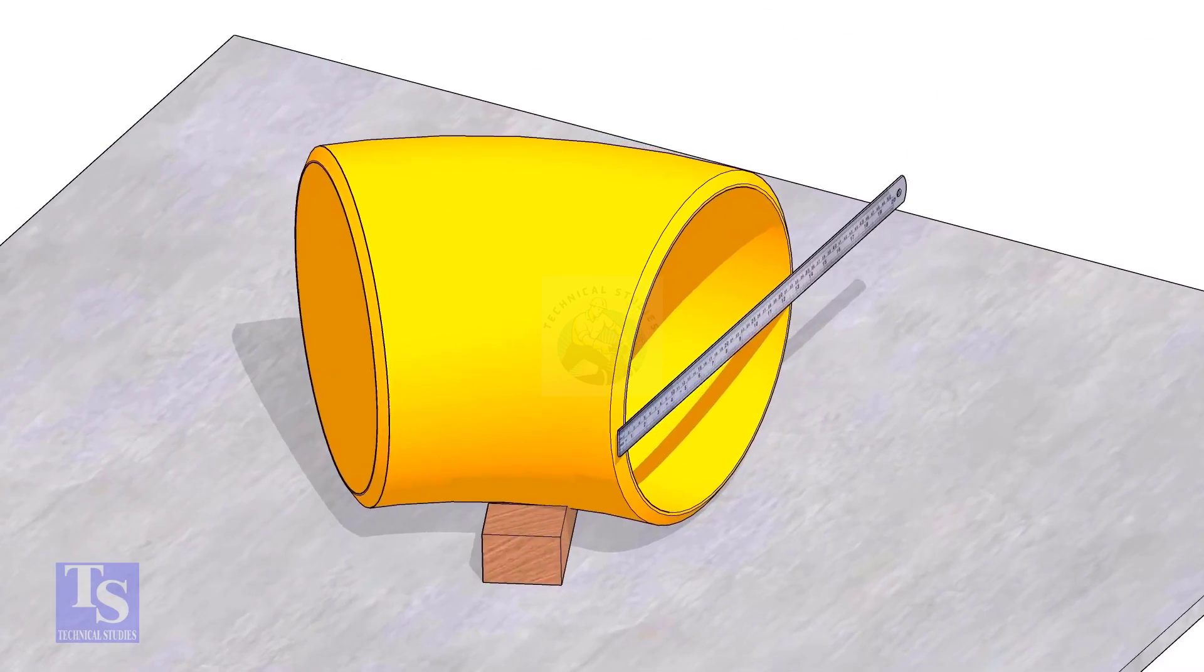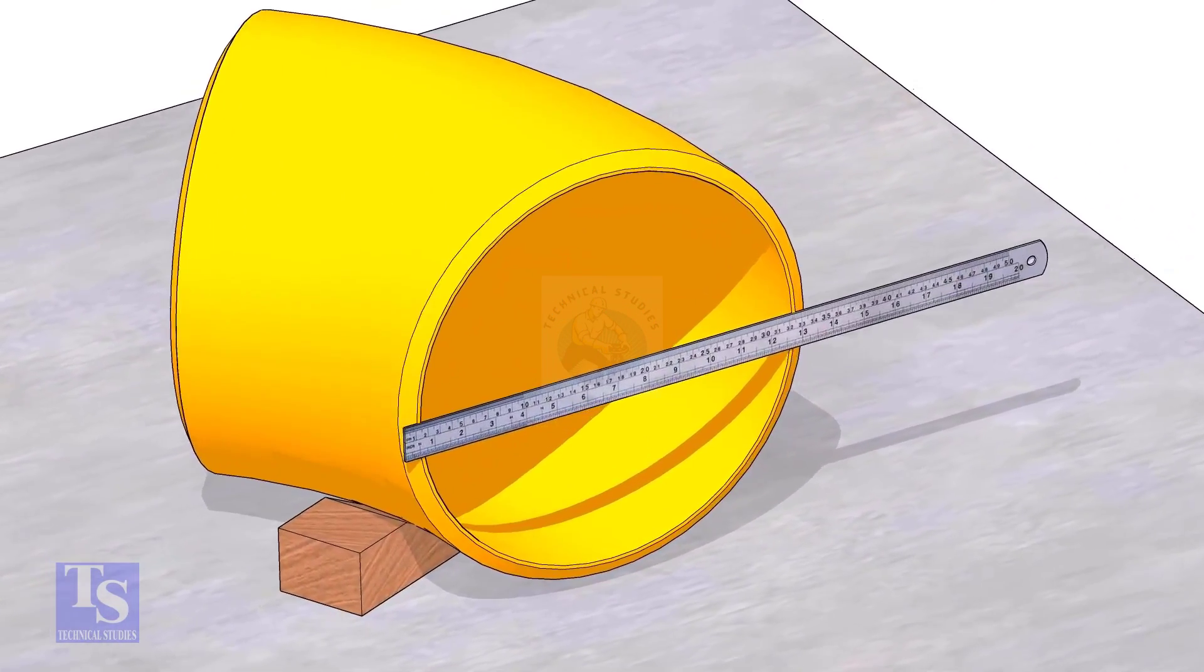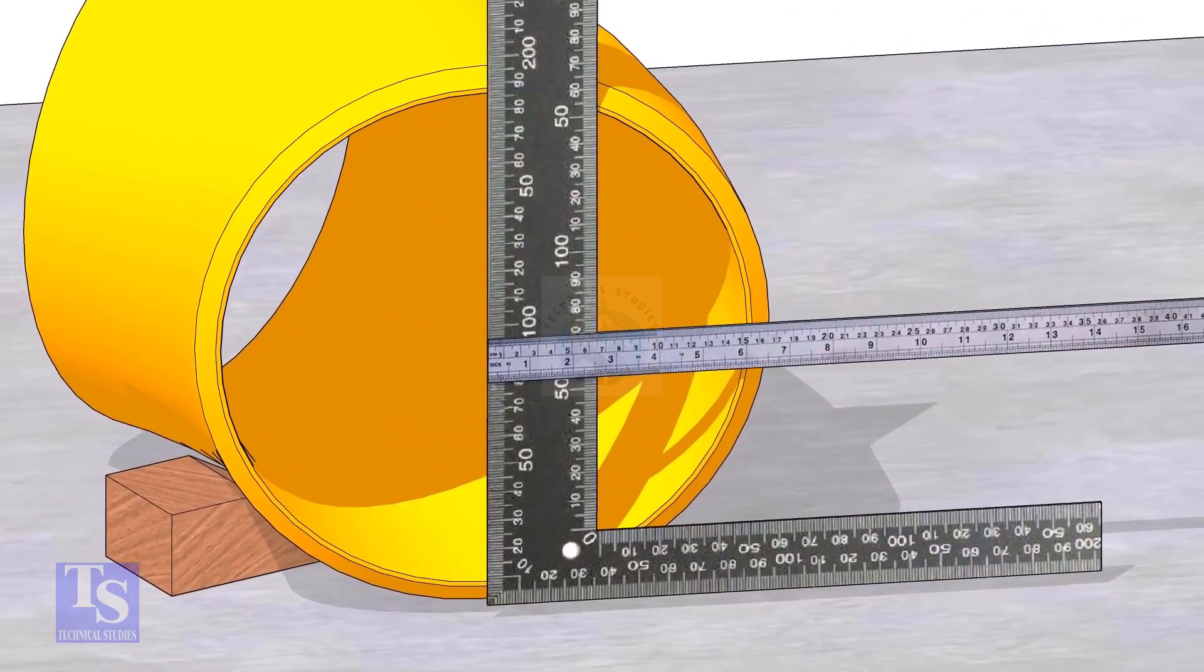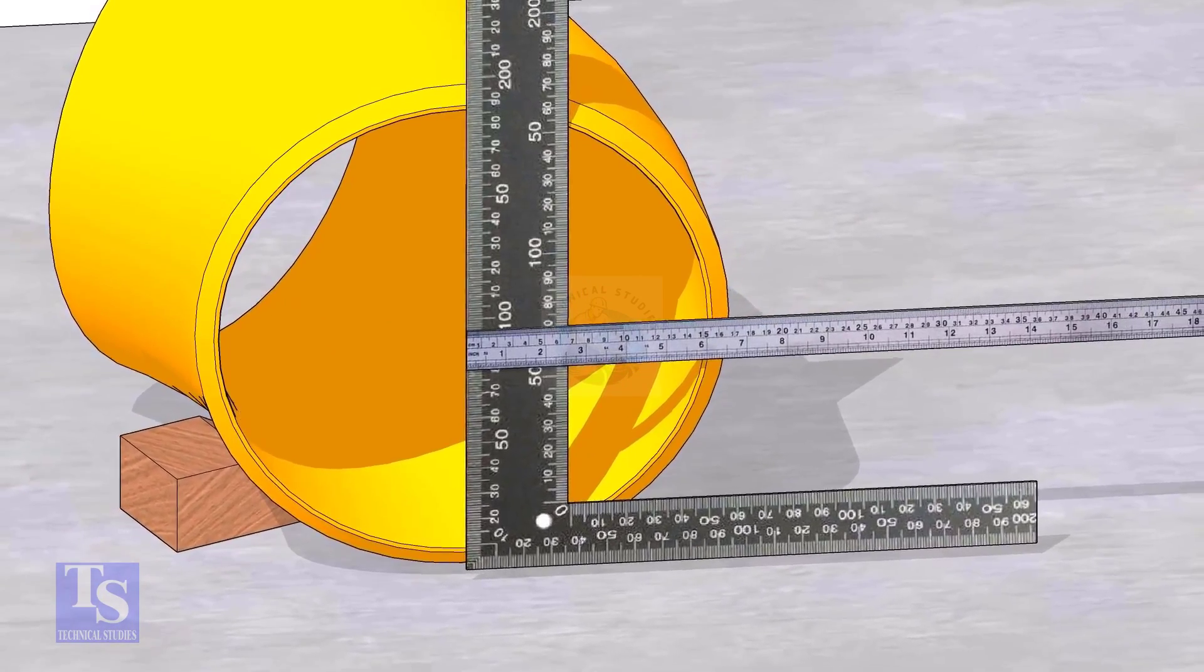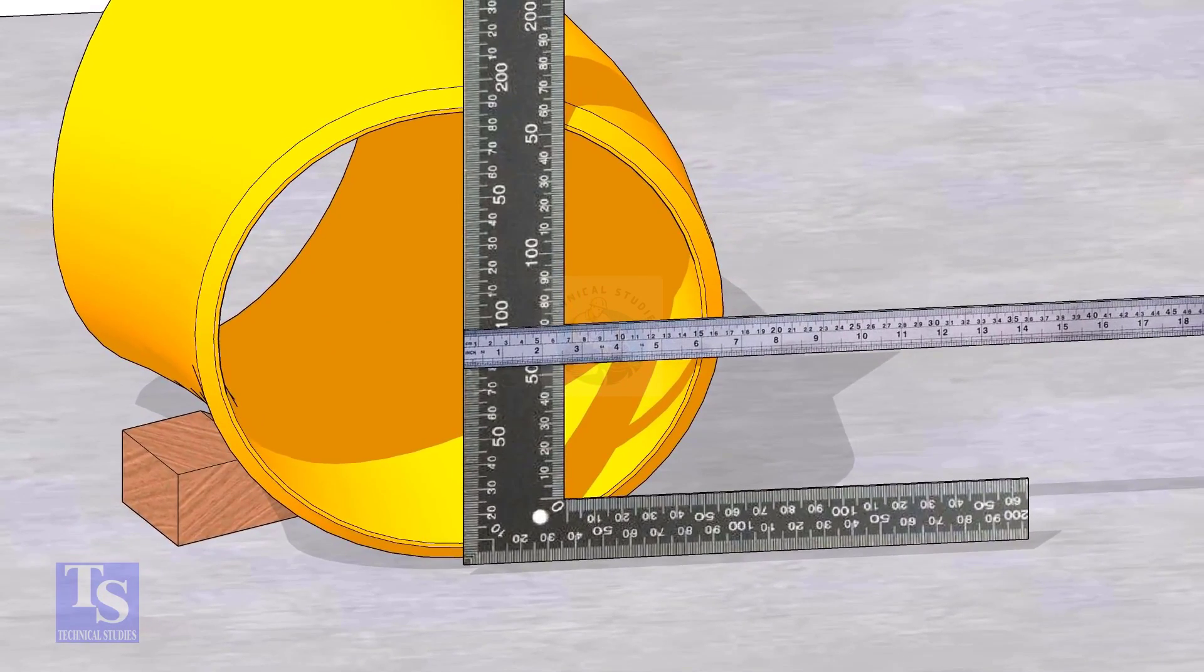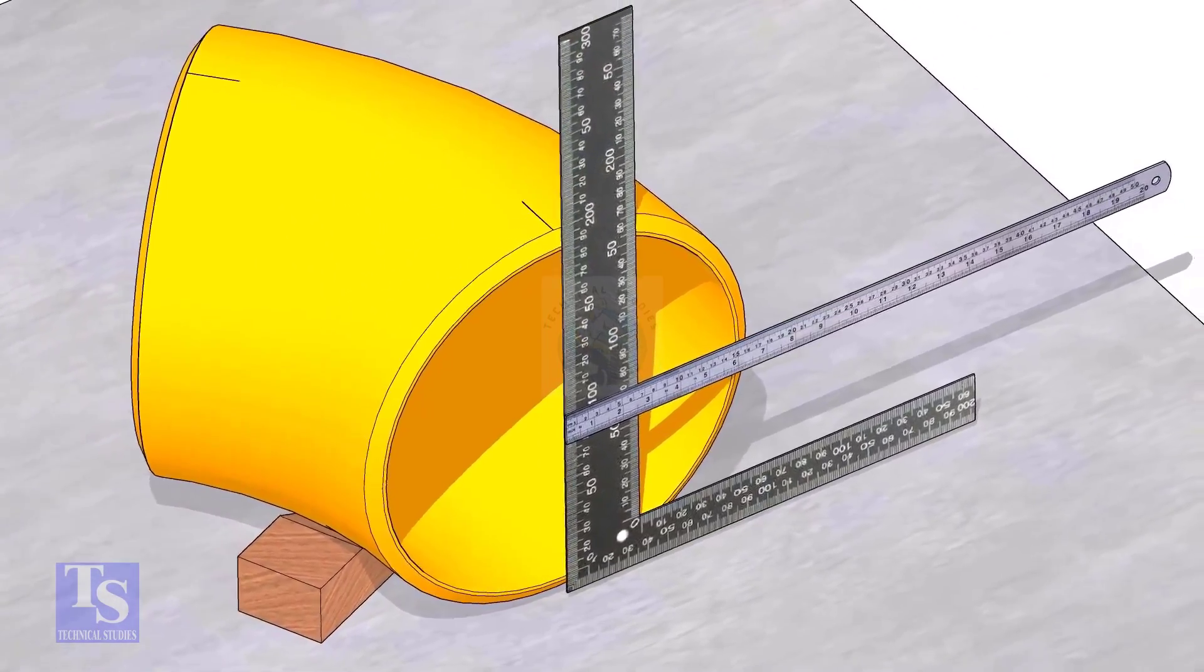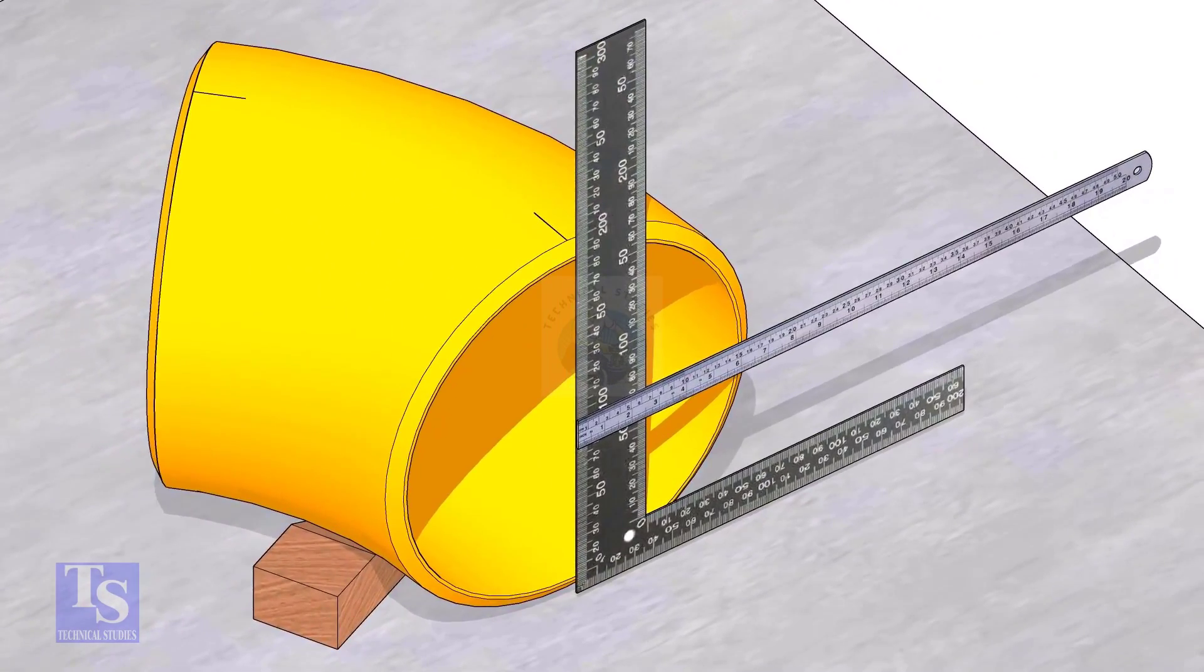Measure the OD. Put a right angle at the middle of one face of the elbow. Make sure the edge of the right angle is exactly at the center. Draw a line where the right angle edge touches the elbow face on the top and bottom side.